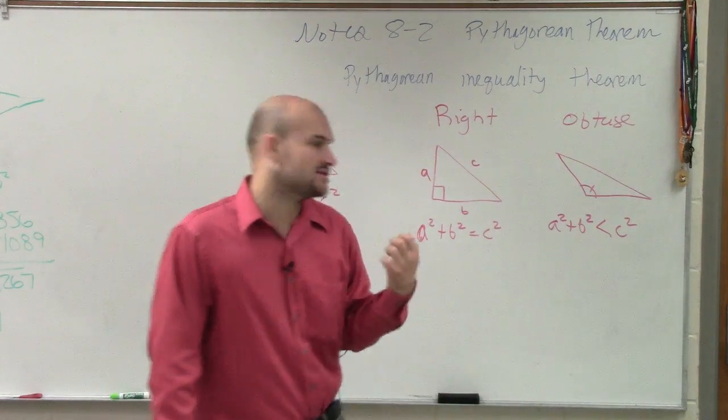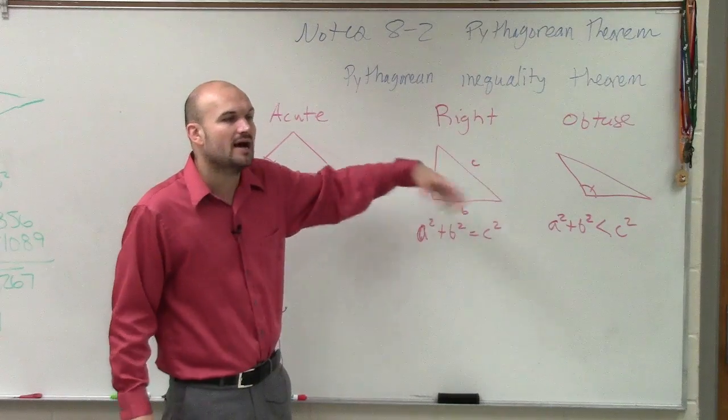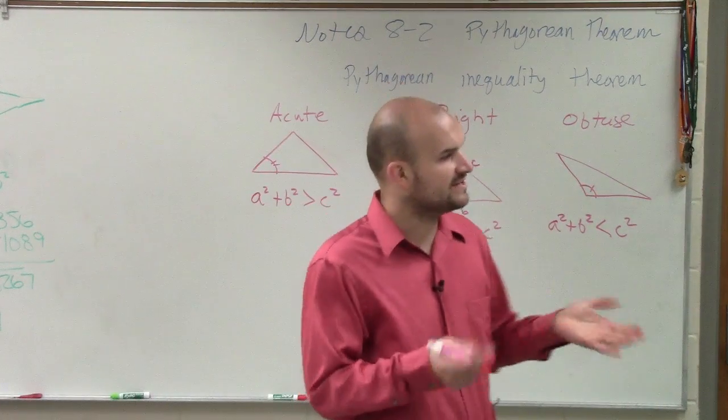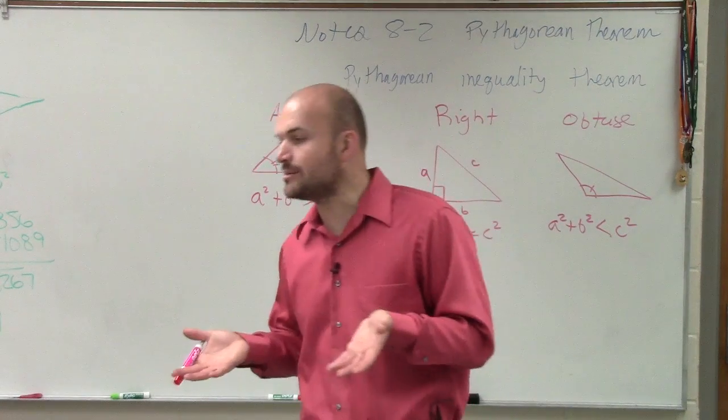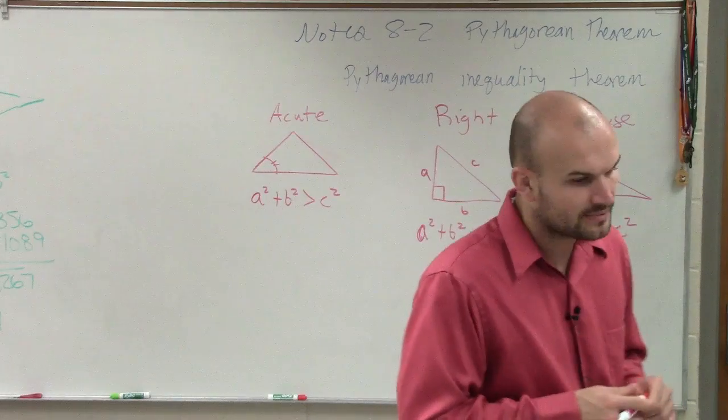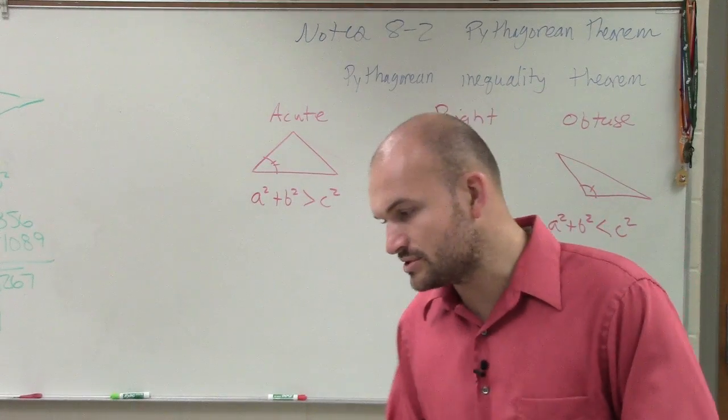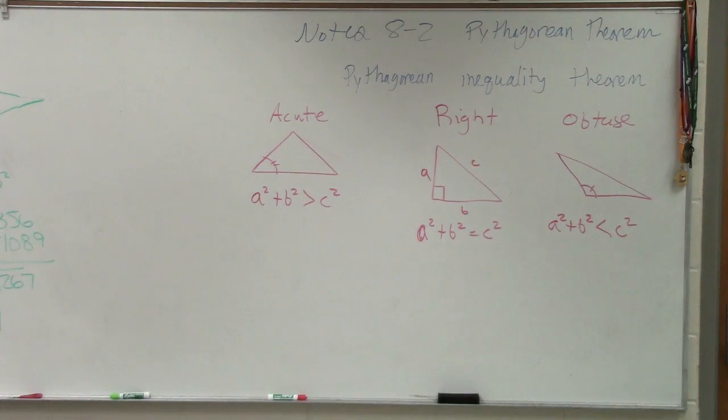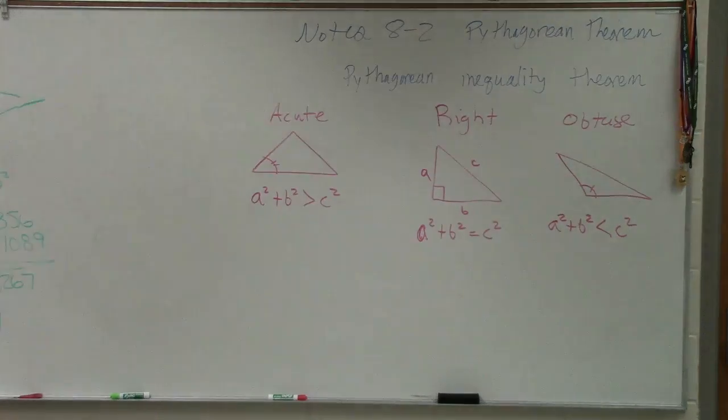So we like to use the Pythagorean theorem to solve. However, I might ask you guys to classify. So you should know: if it's greater or less than the sum of the squares of the two sides, is that going to give you an acute or an obtuse triangle?